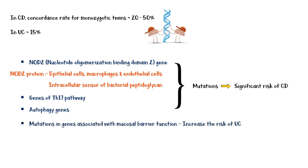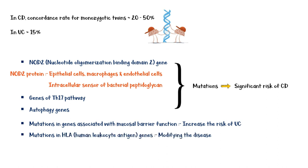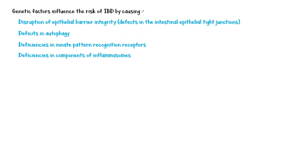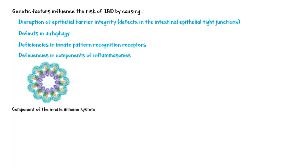Mutations in genes associated with mucosal barrier function increase the risk of ulcerative colitis. Moreover, mutations in HLA genes are found to play a role in modifying the disease. Genetic factors influence the risk of inflammatory bowel disease by causing disruption of epithelial barrier integrity — mainly due to defects in intestinal epithelial tight junctions — deficits in autophagy, deficiencies in innate pattern recognition receptors, and deficiencies in components of inflammasomes. Inflammasomes trigger caspase-dependent processing of inflammatory mediators, which aids in bacterial killing.